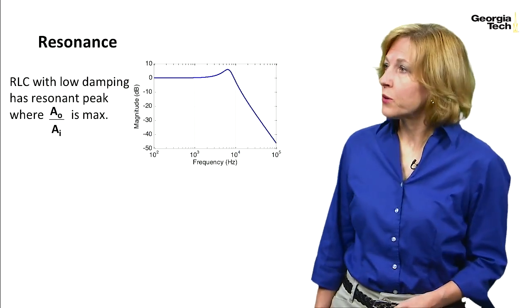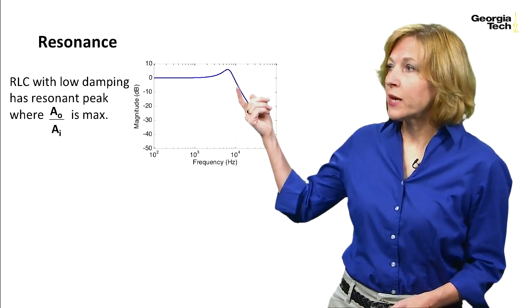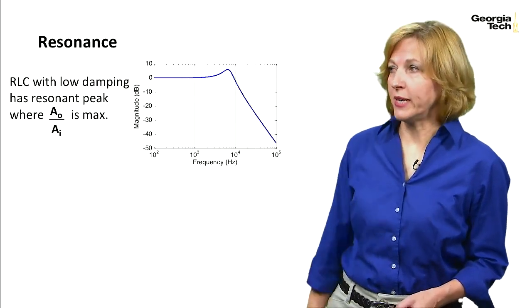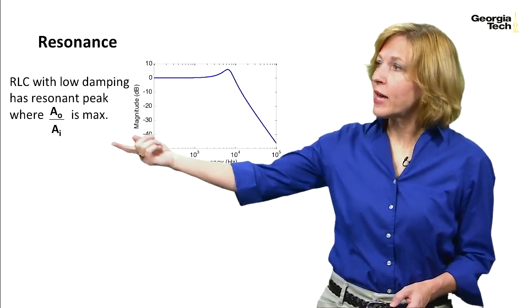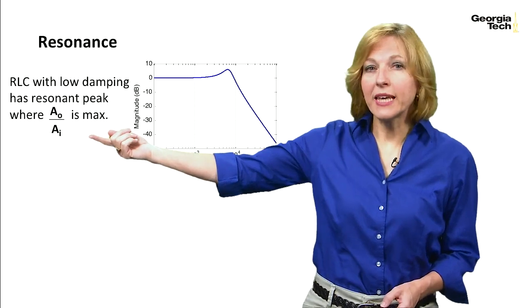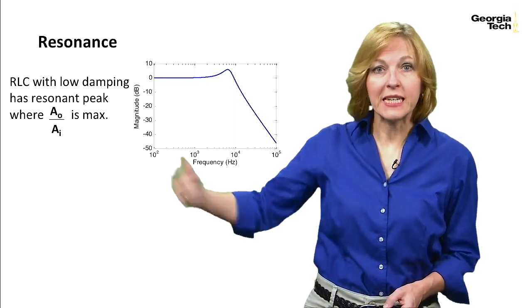To summarize that sine sweep experiment, with resonance, with low damping or low value of R, we get a peak right here. Where that peak, it happens where the output amplitude over the input amplitude is at its maximum.